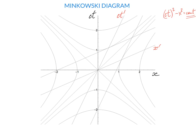Let's orient ourselves in this diagram. How would we represent the world lines of the two ends of a ruler of length 1 that is at rest in reference frame k? We place the ruler so that at t equals 0 it stretches from 0 to 1 along the x-axis. Because it's not moving in reference frame k, the world line of its left end is a vertical line, and the world line of its right end is also a vertical line. Everything inside the ruler forms this band, and the world line of the right end of the ruler is tangent to the line of constant interval.